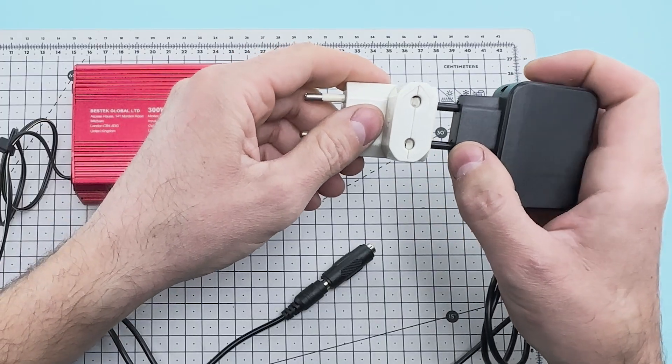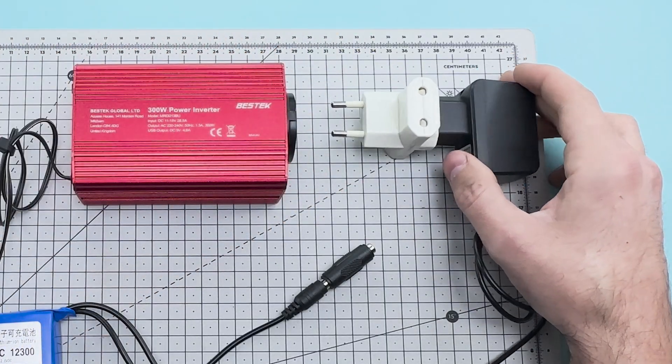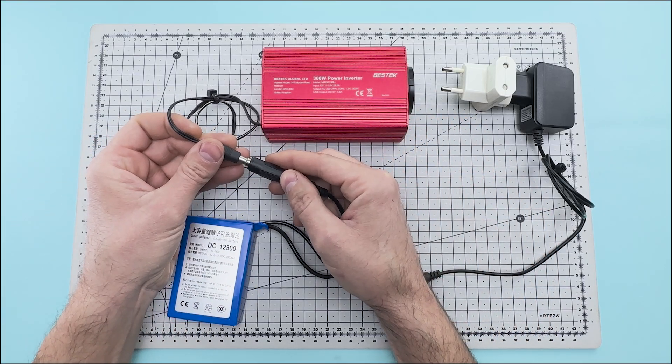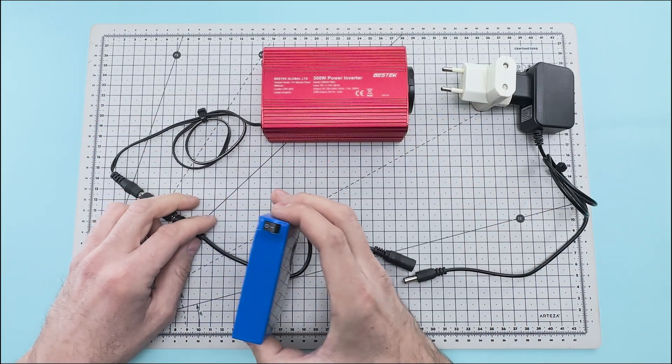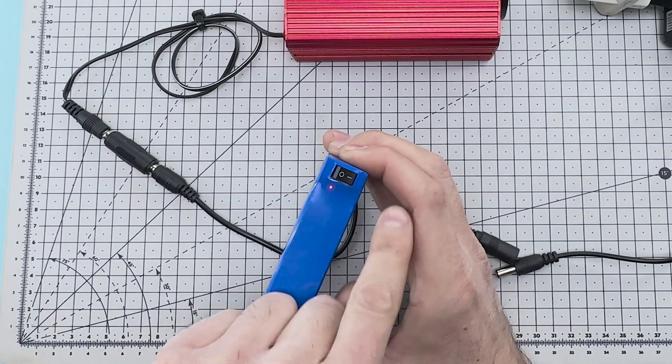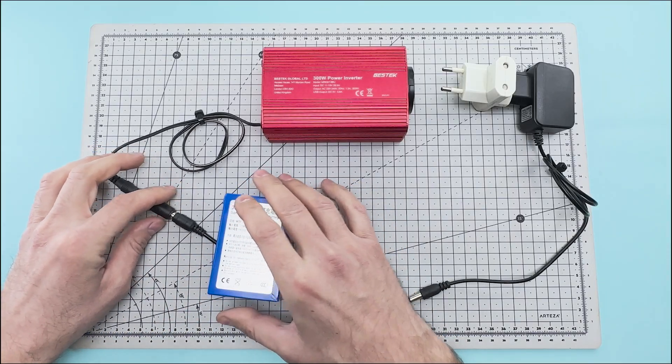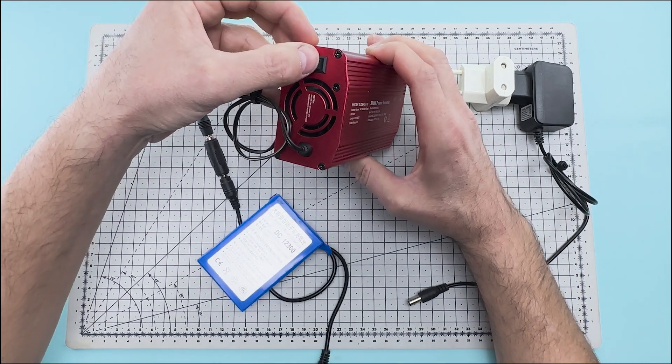We connect it to a multi-plug power strip. We connect the power inverter to the lithium battery. Now we press this switch to turn on the battery and turn on the power inverter.